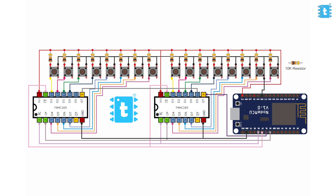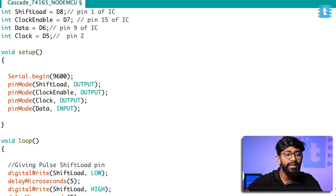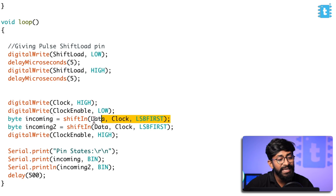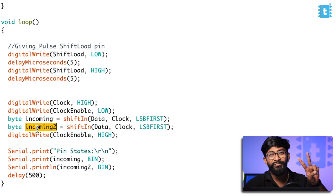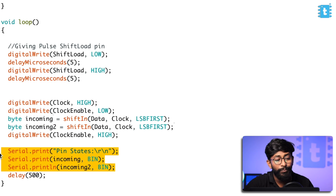Let me show a demo by taking 16 different inputs using the same four GPIO pins. For that, make connections of all components according to the connection diagram shown. In the connection, we basically provide the output of the first IC to the input of the second IC. In the code, everything is the same except two lines — we declare two different incoming variables and store each byte in a particular variable, giving us 16 bits of data from 16 different inputs on the serial monitor.